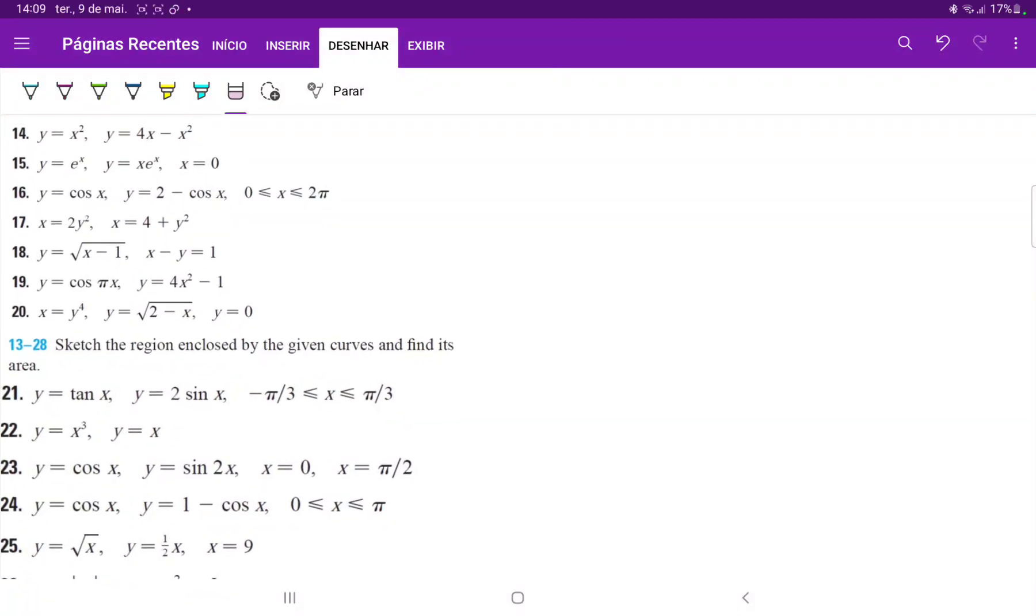For number 18 we have to draw these curves and then find the area between them. So the first curve over here, this is just a square root function that's been shifted to the right by one unit.